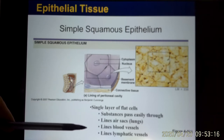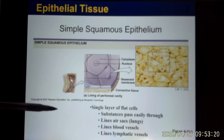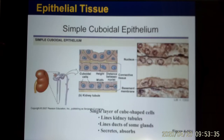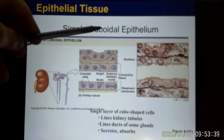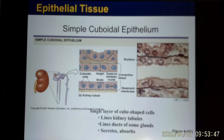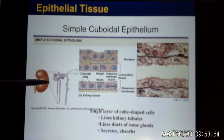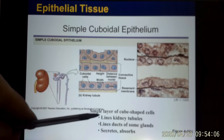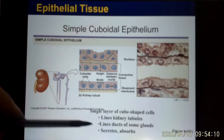Simple cuboidal is one layer of cube-shaped cells found in glands and tubes — like in the kidney. The kidney has tubule structures called nephrons that filter blood and produce urine, and they have simple cuboidal epithelium. Simple columnar is one layer of long cells, usually with microvilli on the surface, found in your small intestines.